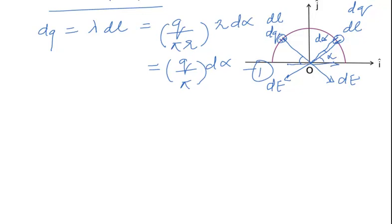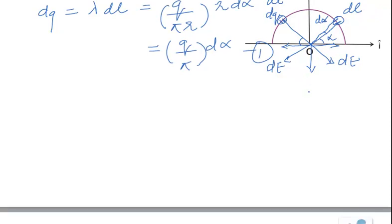Now if you take the component along the x-axis, they would cancel out, but the component along the y-axis or the negative y-axis would add up. So while calculating the electric field, we need to only consider this element - the component of the electric field in the y-direction. If this is α, this will also be α, and if this is α then this will become dE sin α.